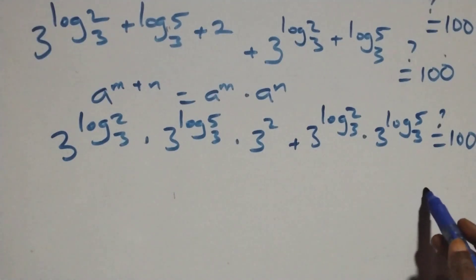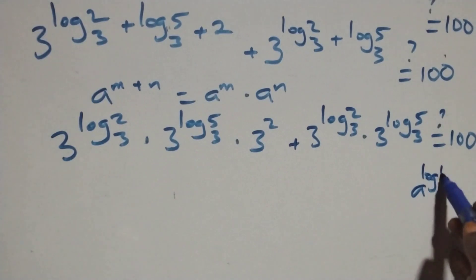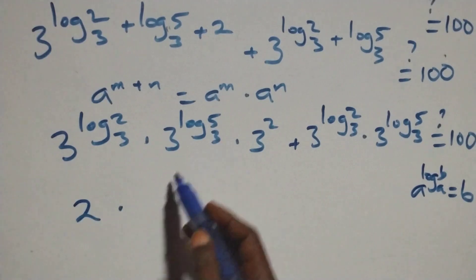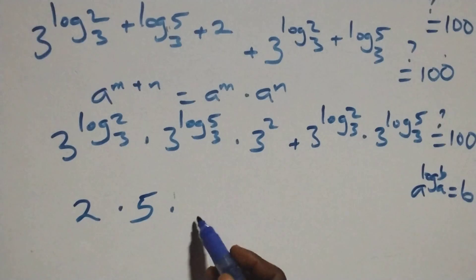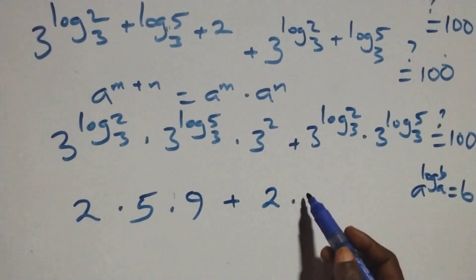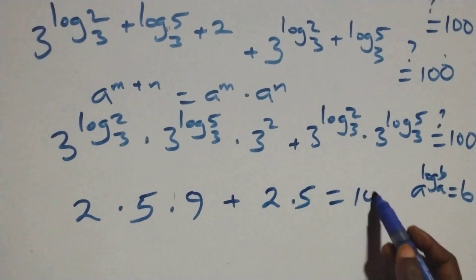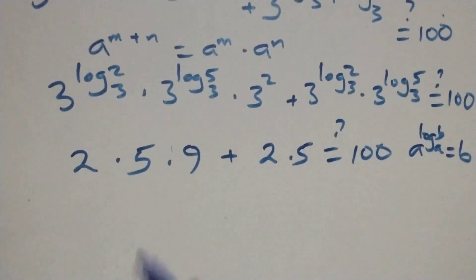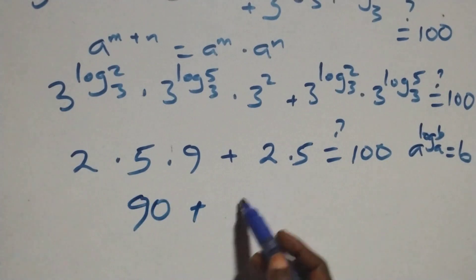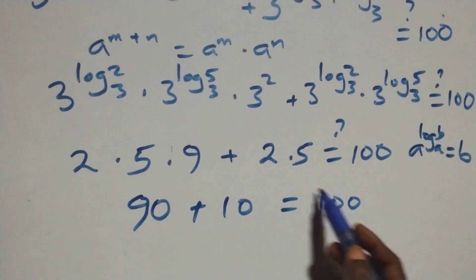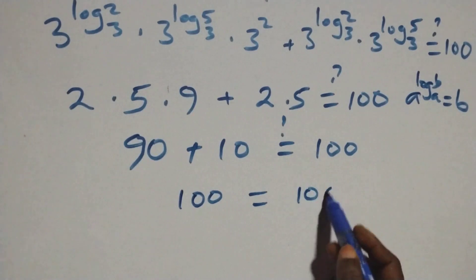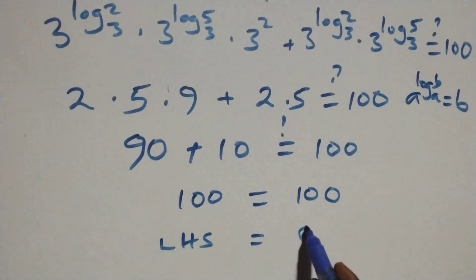This follows the identity: a raised to power log b to base a is the same thing as b. At this, we have 2 times 5 times 3 squared, that's 9, then plus 2 times 5, which equals to 100 on this side. That is 2 times 5 is 10, and 10 times 9 is 90, plus 2 times 5 that's 10, equals to 100. And of course 90 plus 10 equals 100, which equals 100 from here. The left hand side equals the right hand side.